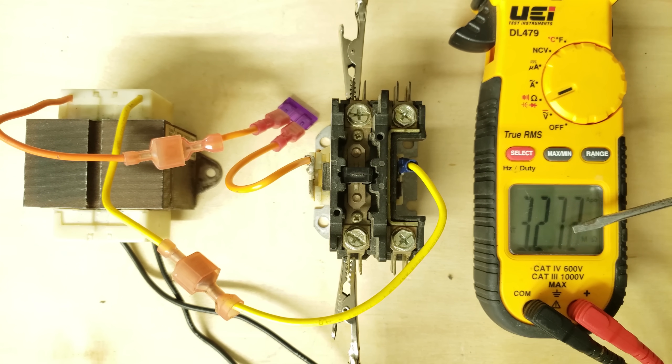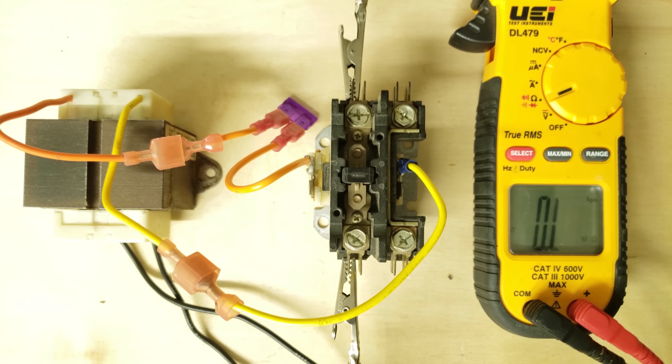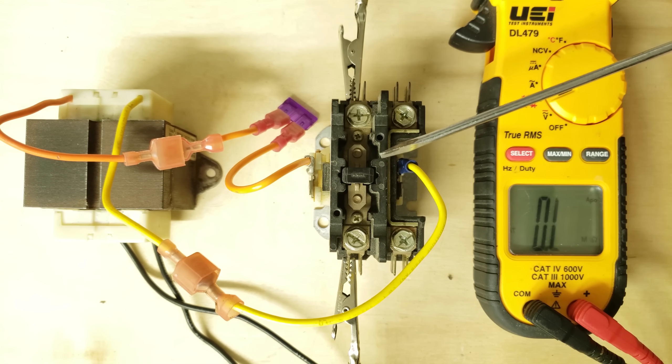It's 3.2 mega ohms so that's as if those contacts are not touching. That's an extremely high resistance reading even though we are powering the contactor. So this contactor will have to be replaced.